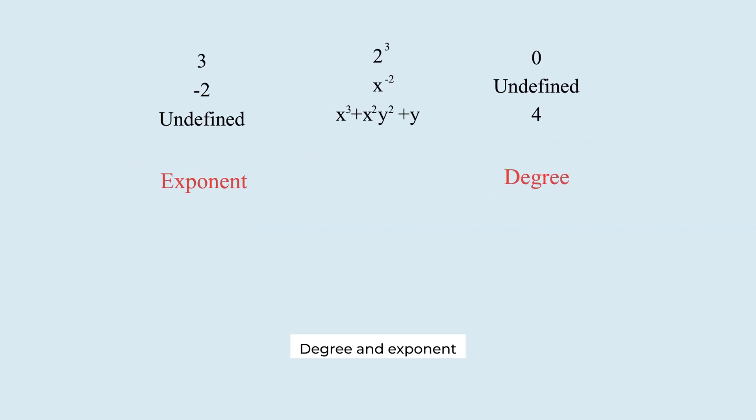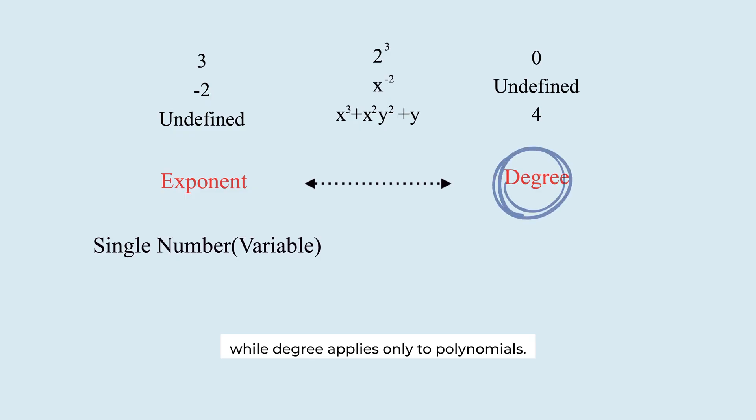Degree and exponent. What's the difference? Exponent applies to a single number or variable, while degree applies only to polynomials. Exponents are local. Degrees are global.